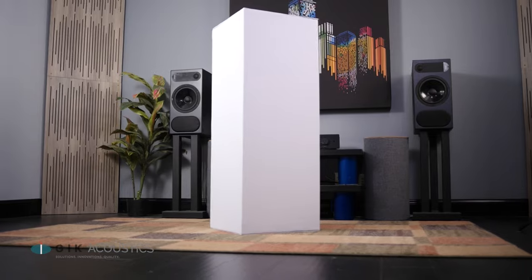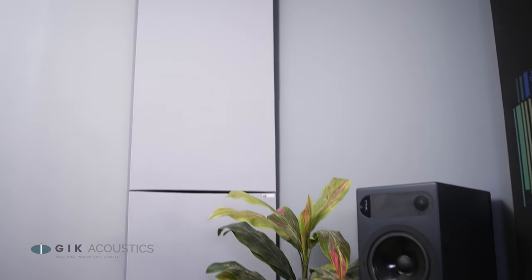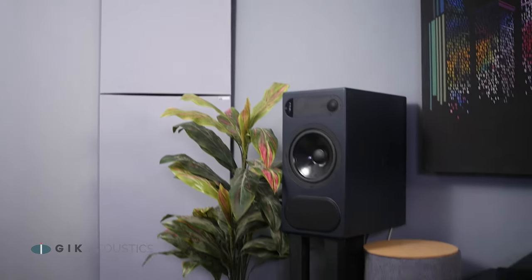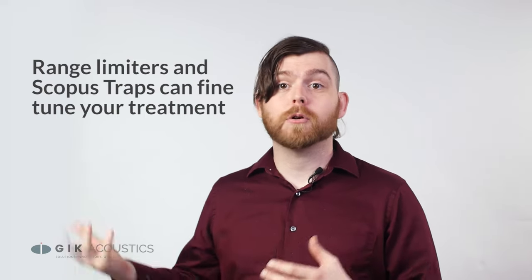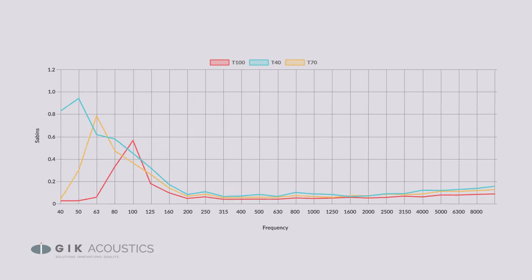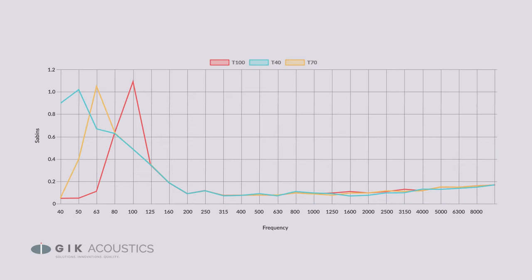But if you're looking for a more fine-tuned bass response, there are other patented GIK technologies that can help you. Our Range Limiters can help absorb more in the low end without impeding or over-absorbing that treble or high range. And our Scopus tuned bass traps can help you eliminate resonances at specific frequencies after you've done the bulk of your treatment.